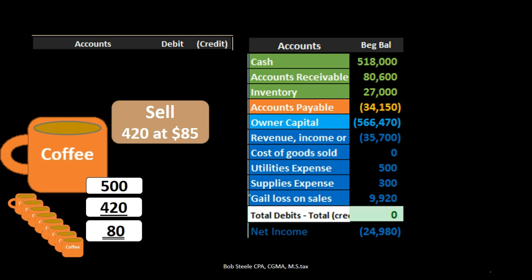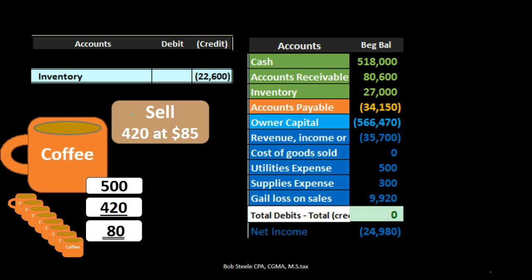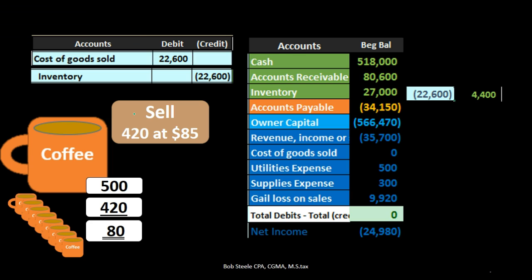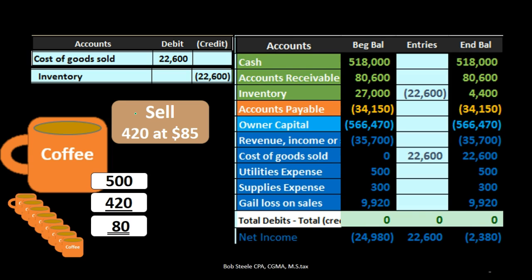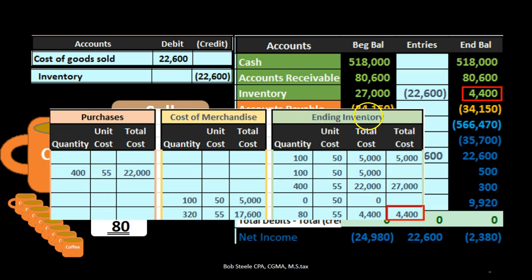If we were to record this transaction — specifically the inventory side, not the sales half (which is a debit to cash or accounts receivable and a credit to sales) — we're reducing inventory to $4,400 and recording the related expense, cost of goods sold of $22,600. What's left in the trial balance or on the balance sheet after this transaction is that same $4,400 on our inventory worksheet under the FIFO method.